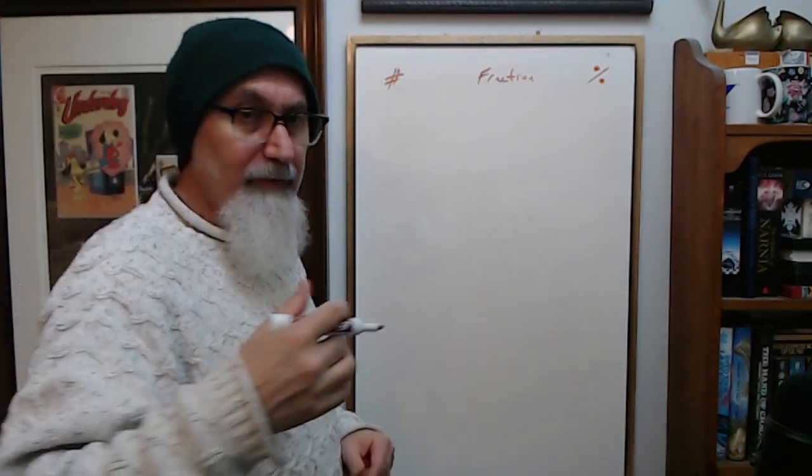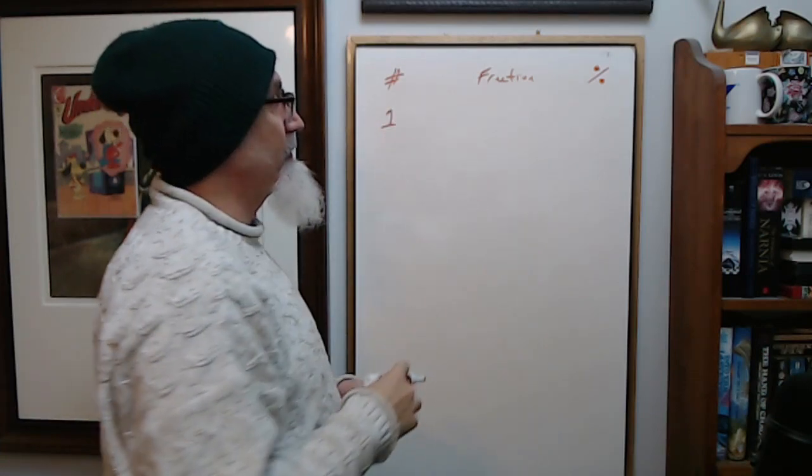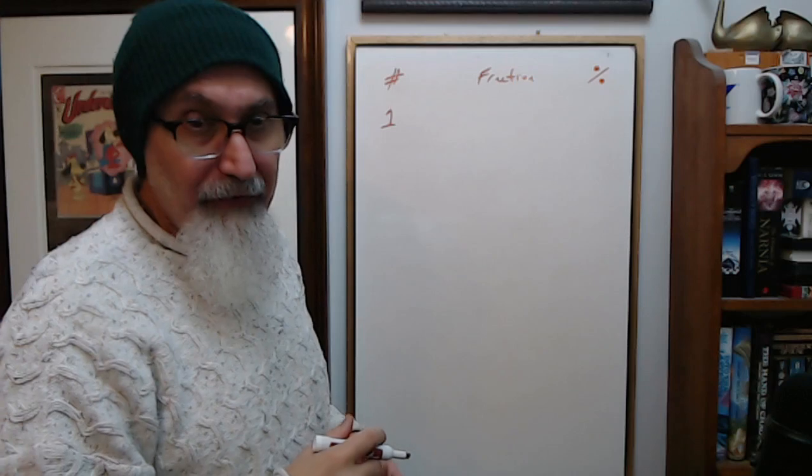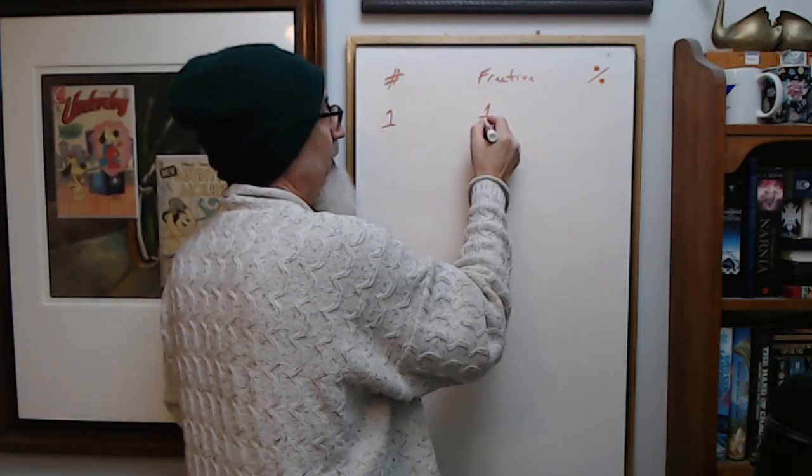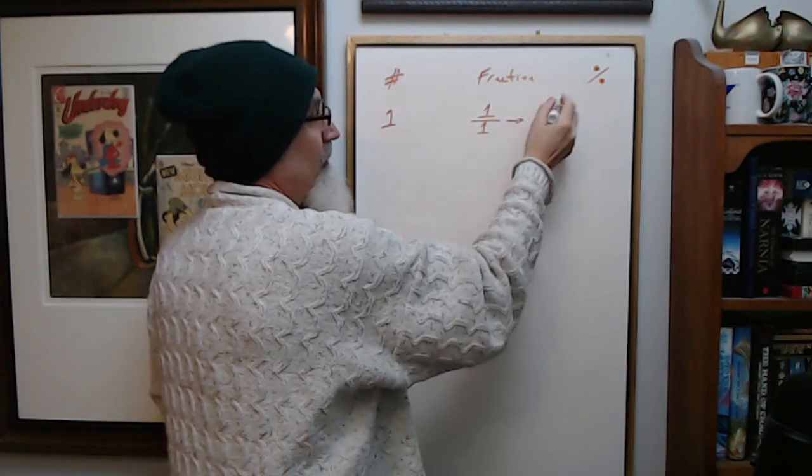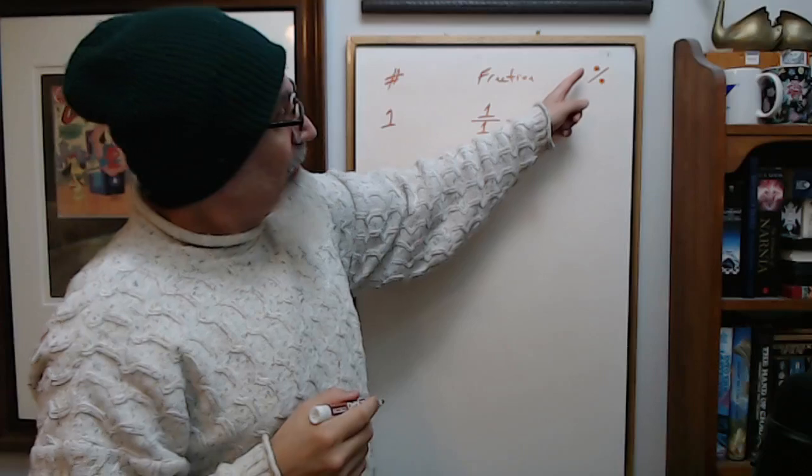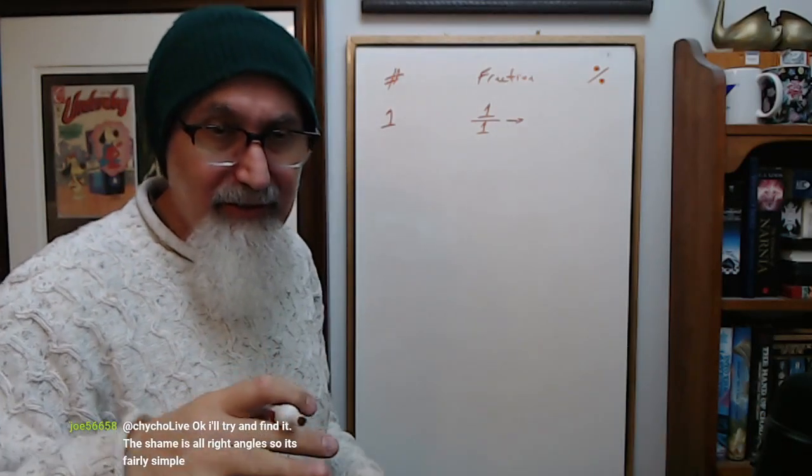Let's assume we wanted to represent number one as a percentage. Well, one thing you could do is convert it to a fraction. One as a fraction is one over one. Percentage means divided by a hundred—you're normalizing percentages.